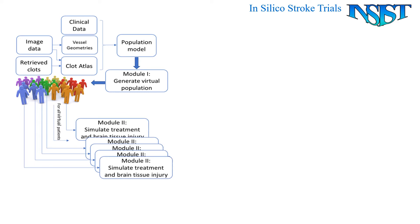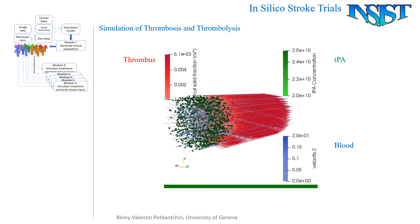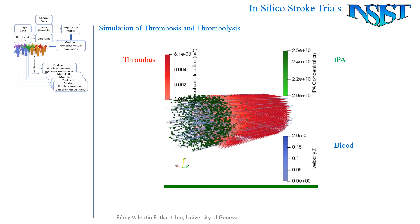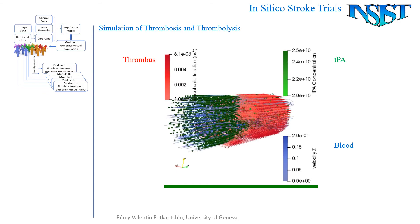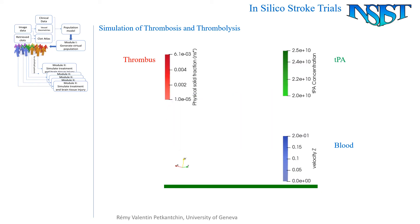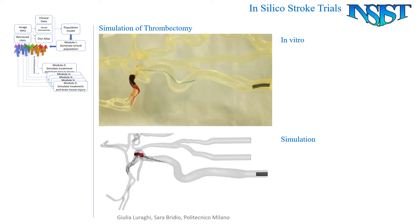Module 2 simulates treatment and its effect on progression of brain tissue damage. We simulate thrombosis and thrombolysis based on haemodynamic forces, transport of blood elements and drugs, and local chemical interactions in the clot. We also simulate thrombectomy based on finite element modelling of devices, properties of the clot and the vascular wall, and vessel geometry of each generated virtual patient.